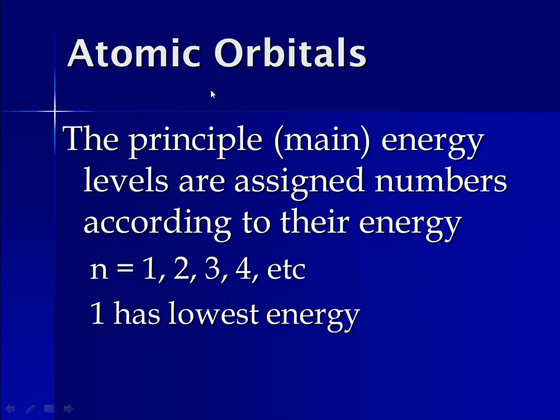The first way that we determine where an electron is, is something called the principal or main energy levels. Those are assigned numbers according to their energy, and they are integers. n is used to depict the principal energy level. They are integers 1, 2, 3, 4, and actually they go from 1 through 7, with 1 being the lowest energy. The lowest energy corresponds to being closest to the nucleus. So as the numbers increase, you're getting farther and farther from the nucleus.